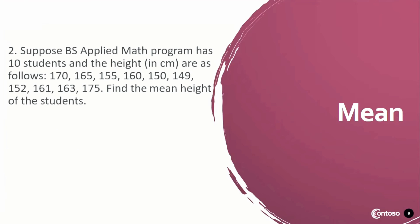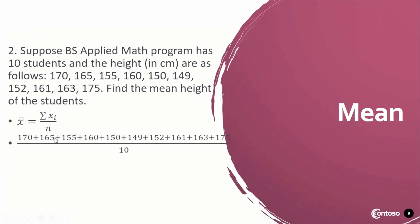Another example for the mean. Suppose a BS Applied Math program has 10 students and the heights in centimeters are as follows: 170, 165, 155, 160, 150, 149, 152, 161, 163, and 175. We are asked to find the mean height of the students. By adding up all the data entry and dividing by 10, we get 1,600 divided by 10, which is equal to 160 centimeters. The mean height of the BS Applied Math program students is 160 centimeters.